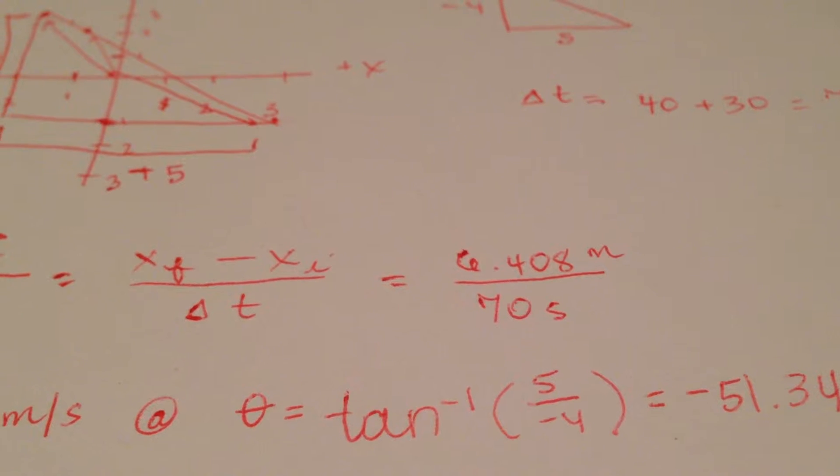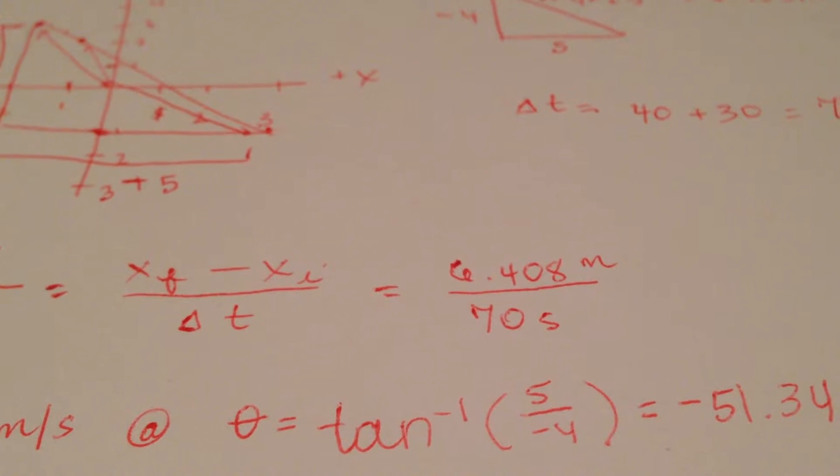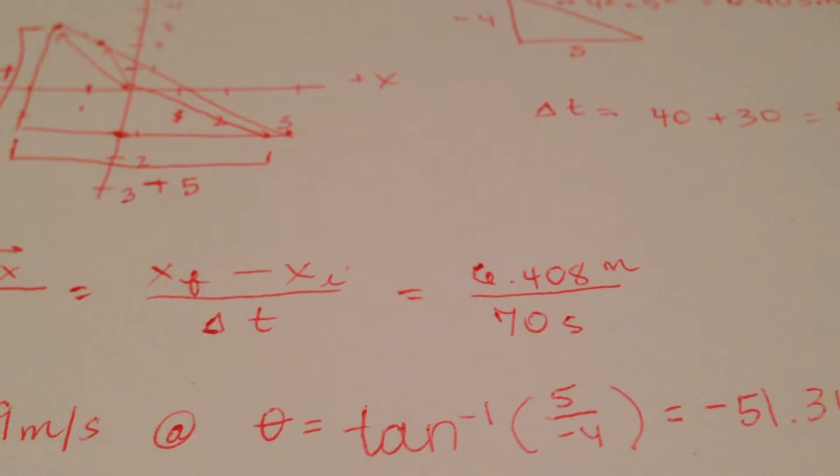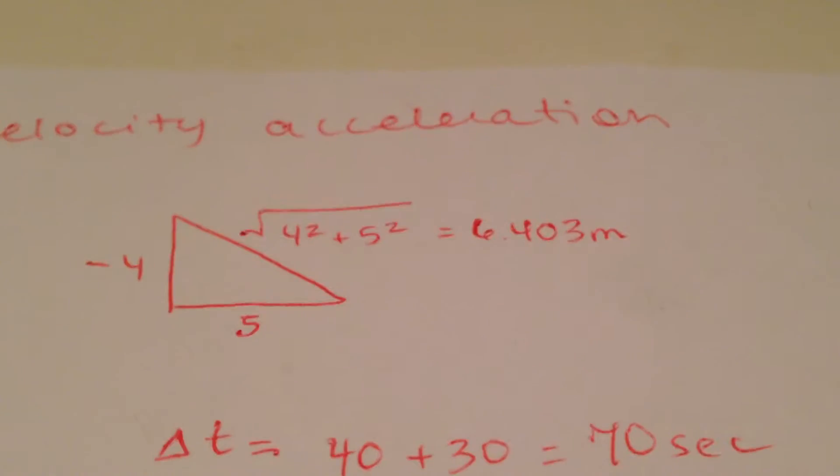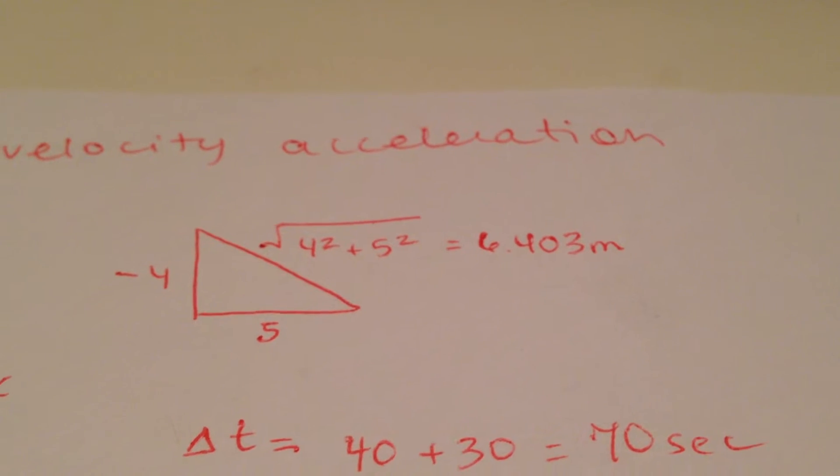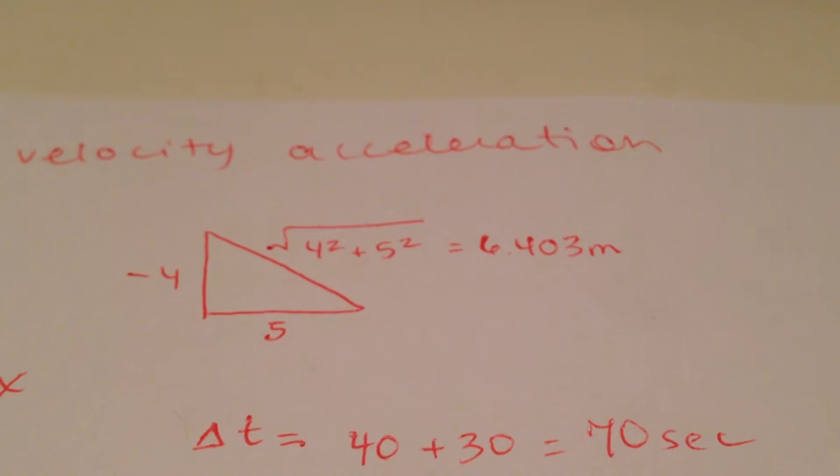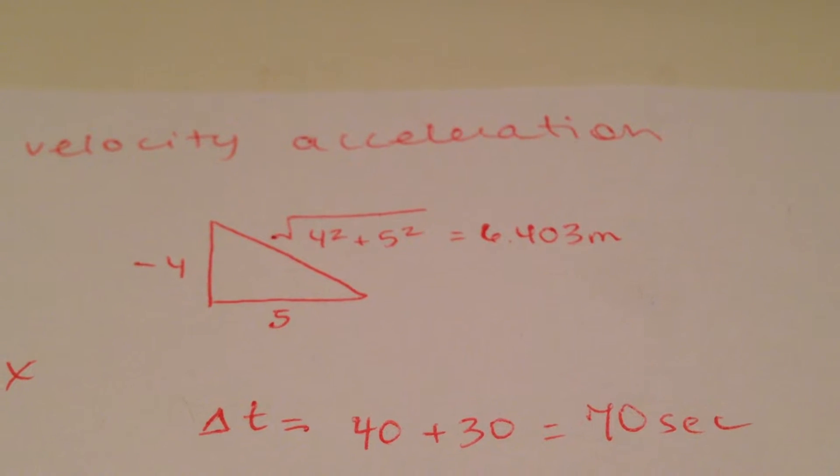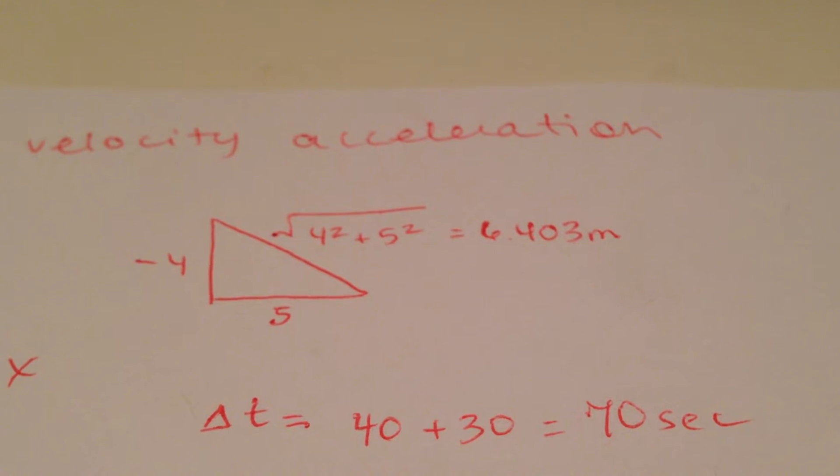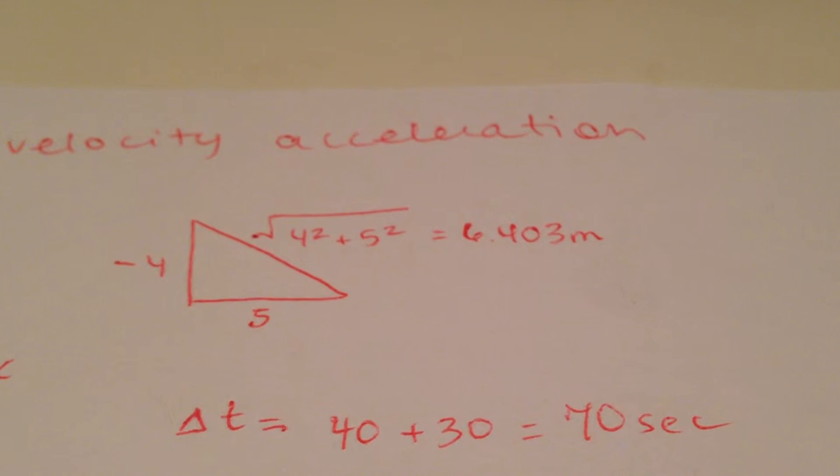Change in x final minus x initial. We know we went negative 4 in the y direction and positive 5 in the x direction. So by using the Pythagorean theorem we could say it's square root of a squared plus b squared equals c squared. So here we go.